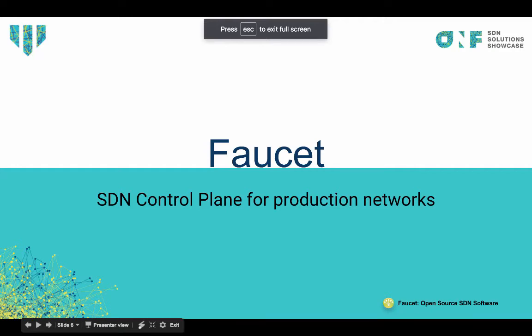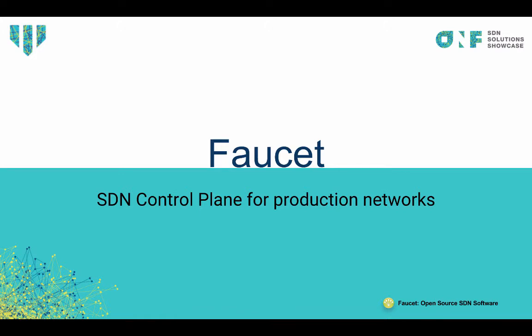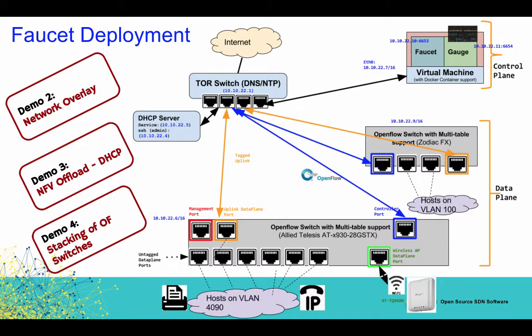Hello, and welcome to this edition of Fawcett Demos. Today we are talking about the Fawcett SDN control plane for production networks. We are going to talk about three demos: how you can deploy a Fawcett OpenFlow network in an existing legacy network, how you can do NFV offloading functionality from an SDN controller, and how Fawcett can be used to manage multiple OpenFlow switches within the same controller.